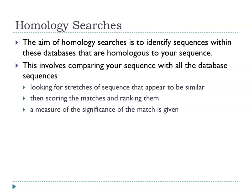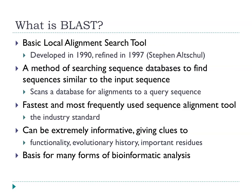The key feature we use with homology is that we can do homology searches. We can take any protein and compare it to all other known proteins — all proteins known to man — within a few minutes. We can then rank scores and start to make inferences about function based on similarities. The industry standard for doing this is BLAST — Basic Local Alignment Search Tool. It's very fast, very straightforward, and very informative because it gives you clues about function, evolutionary history, and important residues.